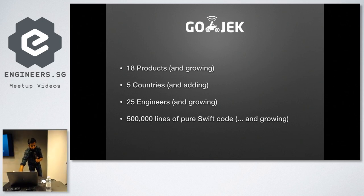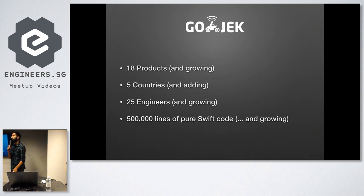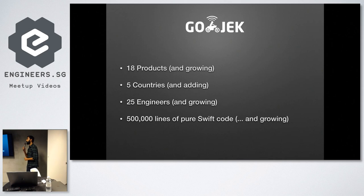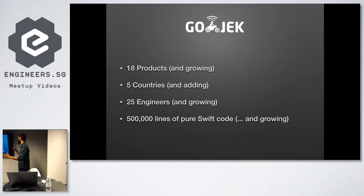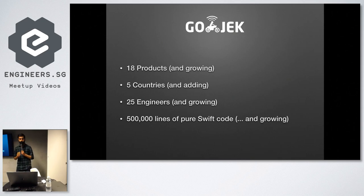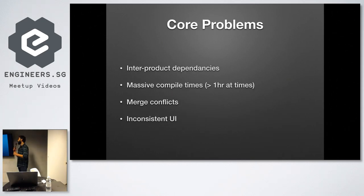We compile about 500,000 lines of pure Swift code. Every time you submit to the App Store or every time you want the entire app to run, we have to compile about half a million lines of Swift code. This is where our core problems begin.